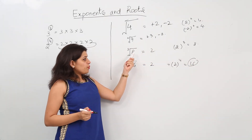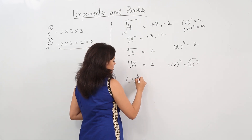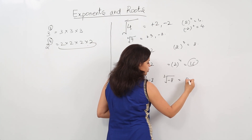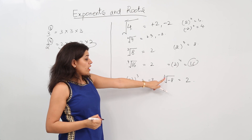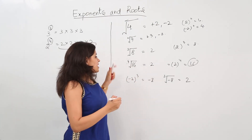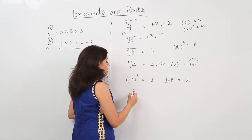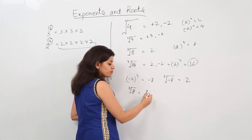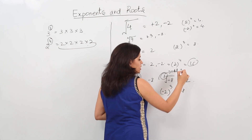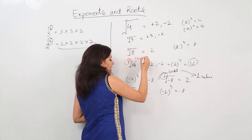Here we can see another thing. If we have a cube root of a negative number — for example, (−2) cubed is −8 — so the cube root of −8 is −2. If we have an odd root, there will be only 1 answer. Whereas if we have an even root, there will be 2 answers. For example, the 4th root of 16 gives 2 and −2, but the cube root of 8 gives only 1 answer: 2.